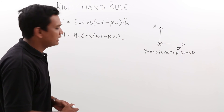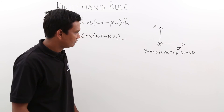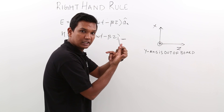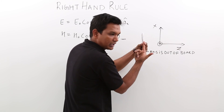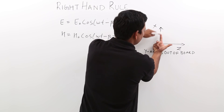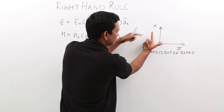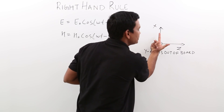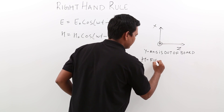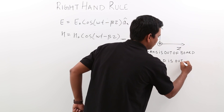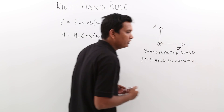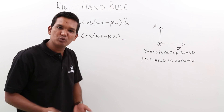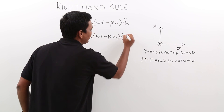The y-axis is out of the board. Now we can apply the same right hand rule for the EM wave as well. We know the E field is along the x-axis, so my forefinger points in the direction of the electric field and this is the direction of propagation. My middle finger is again pointing outward — in the direction of the magnetic field. So the H field is also pointing outward, parallel to the y-axis. Therefore my H₀ will be pointing along â_y.